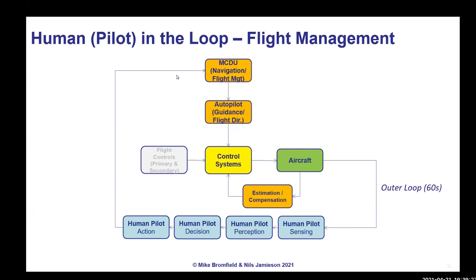In the outer loop, the pilot puts control inputs into the MCDU, which controls the autopilot and flight director, which in turn controls the systems of the aircraft, modifying control surfaces to maneuver the aircraft. Stability augmentation systems provide some compensation. Typically the motion of the aircraft is sensed by the pilot with about a 60-second delay from input to output. The human pilot senses the situation using visual, oral, tactile, and proprioceptive cues, then perceives, decides, and acts.